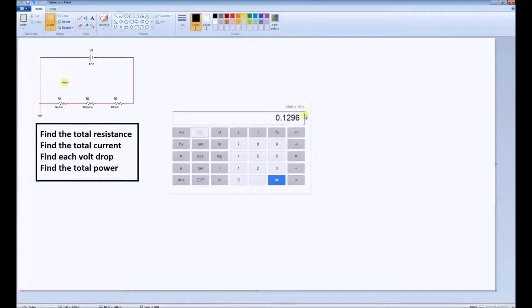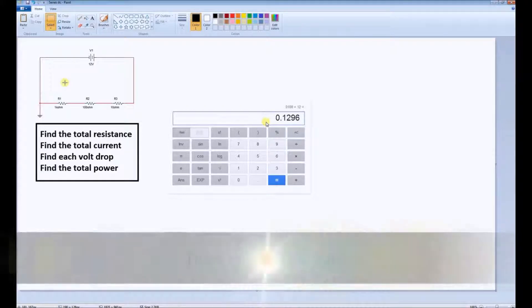It gives us a total power dissipated for this circuit of 129 milliwatts, or 0.01296.